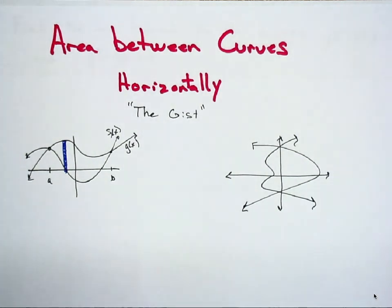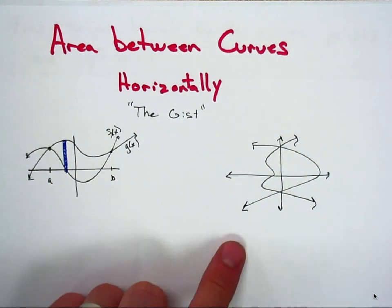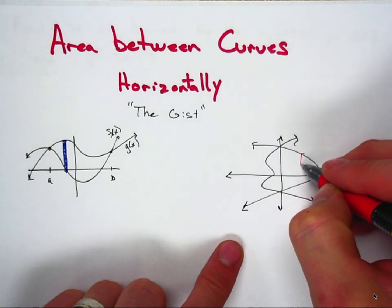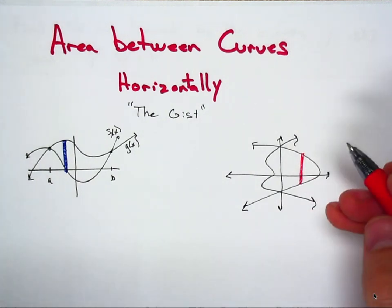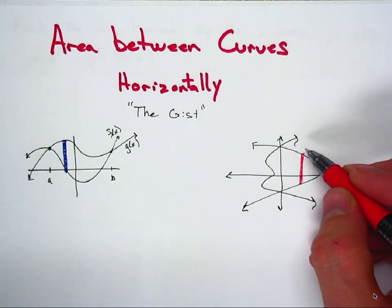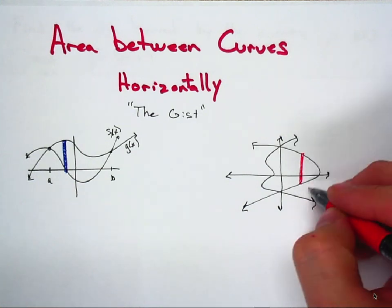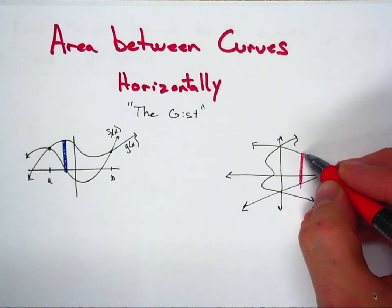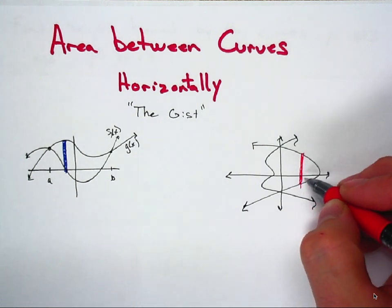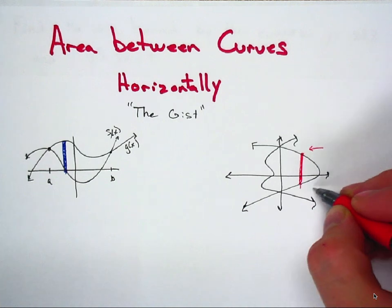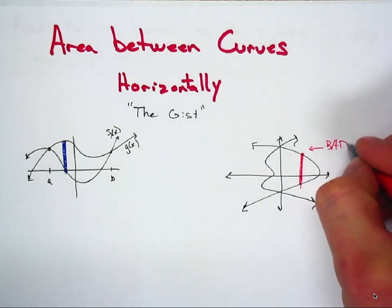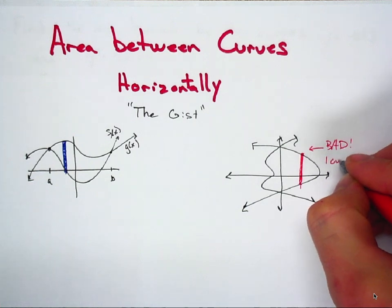Now, if you have a curve that looks like this instead, there's an issue that occurs if we use the same reasoning. If I were to draw in a sample rectangle that was vertical, here's an example of what that sample rectangle would look like. You'd shade it in and ask: where exactly is this value and that value? Because you still have the greater — the top part — minus the lesser. But there's one x value there, and that gives us two different y values, which is no good, because this top part and this bottom part are created by the same curve. So this is a bad sample rectangle because there is only one curve being used.